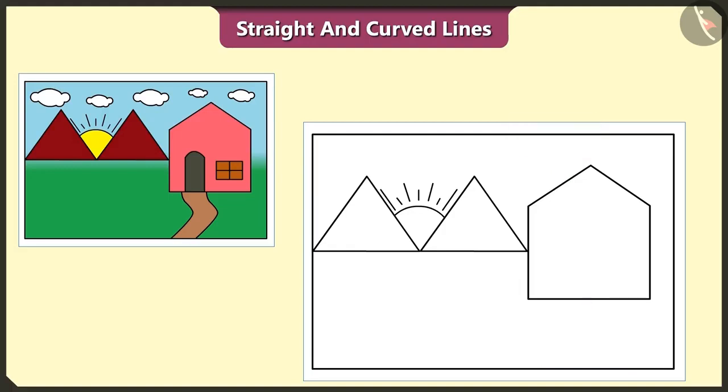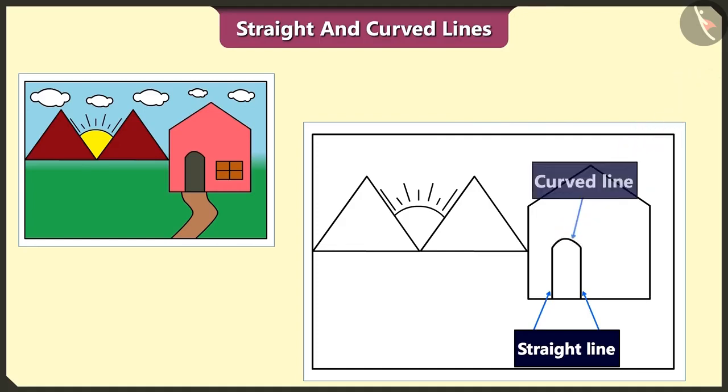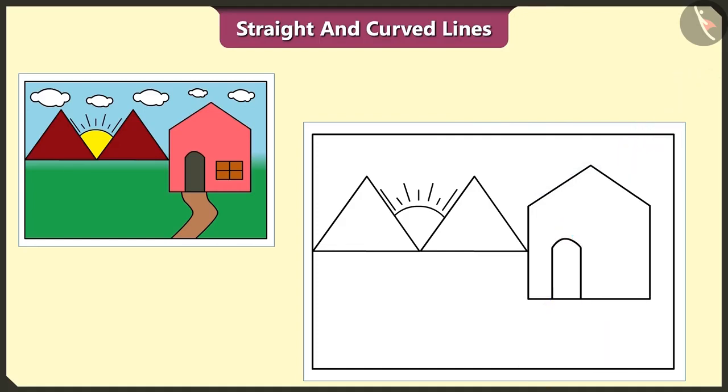Oh, we forgot to draw the door and the window of this house. Yes, let's draw. Let's draw a door by using two straight lines and one curved line. And draw this window using these six straight lines. Now, let's draw the path to the house with the help of two curved lines. Also, let's make clouds here.